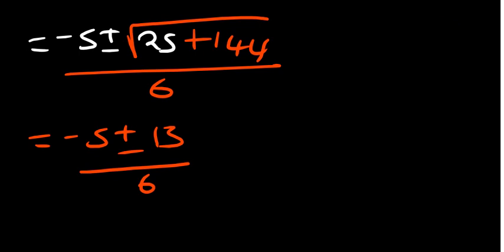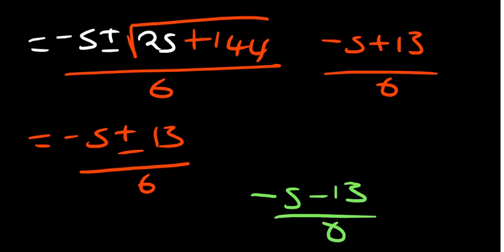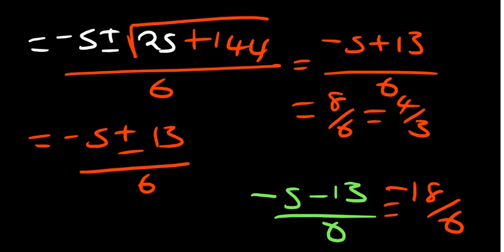So we have the first one to be negative 5 plus 13 over 6. The other possible value or solution to be negative 5 minus 13 over 6. So I'll start with the first part. Negative 5 plus 13 is 8 over 6. So 8 over 6 is the same as 4 over 3. 5 minus 13, 5 plus 13 is 18. So it's negative 18 over 6. And our answer is negative 3. So these are the two possible solutions for that question.